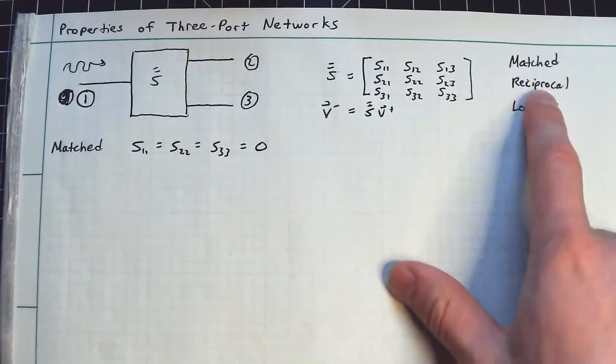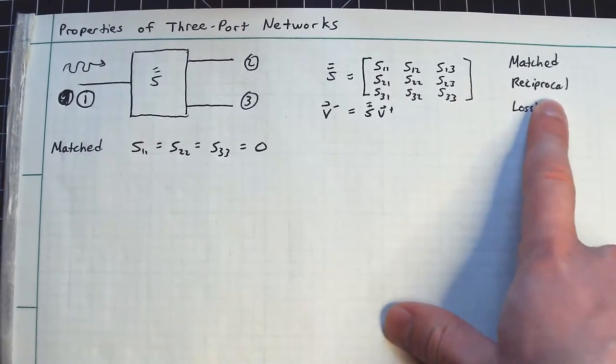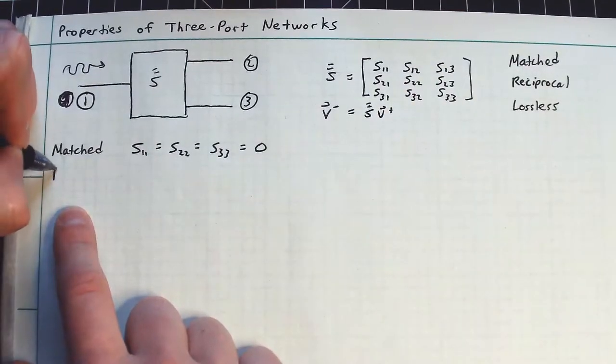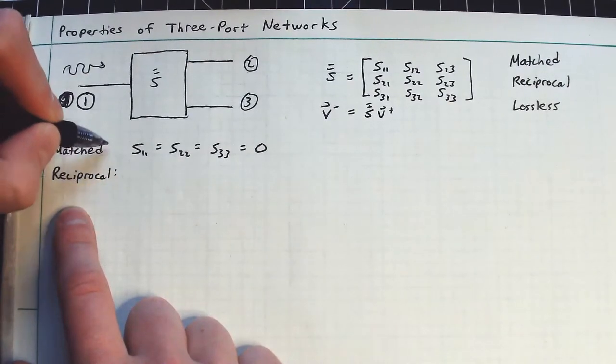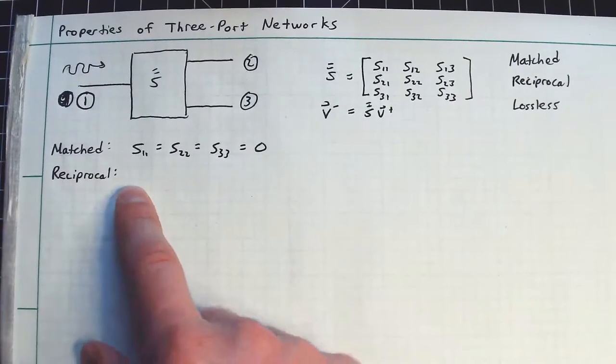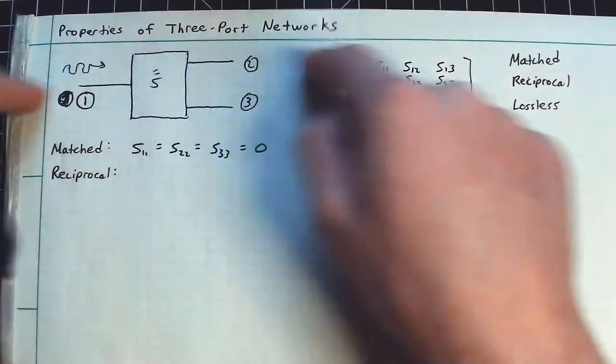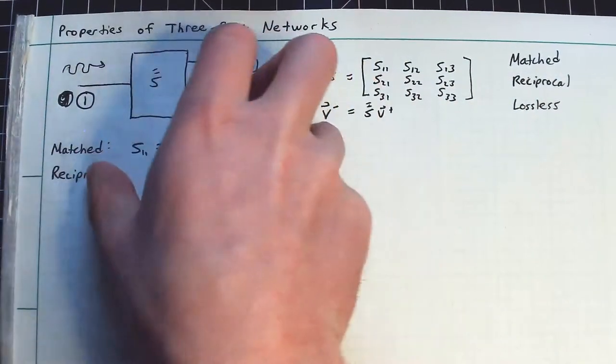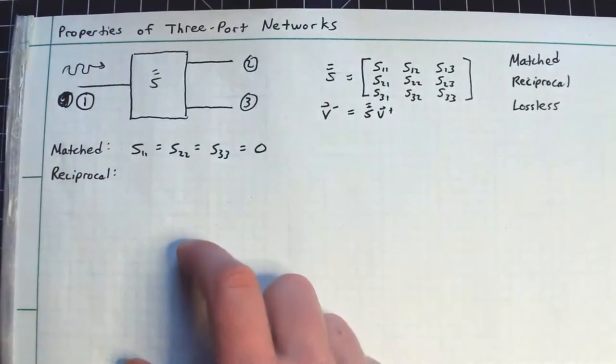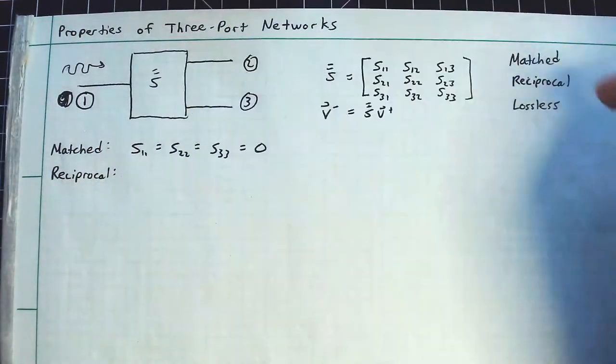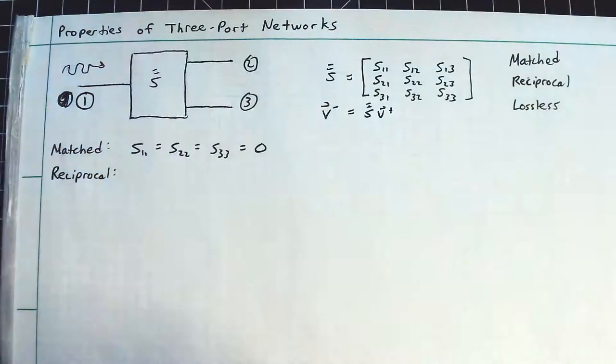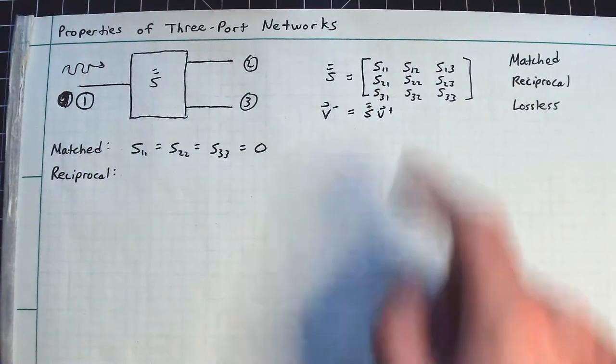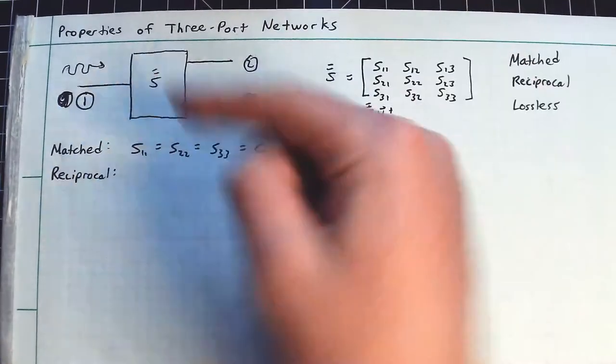Another common property we always like to talk about is this notion of reciprocal. Remember, reciprocal, that basically just meant if I excite a signal here and something comes out the other two ports, and then I rotate and excite here, I should see the same kind of thing happening out of the other ports there. So there's no real preferred direction in the behavior of a port, depending on which node is excited.